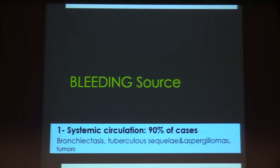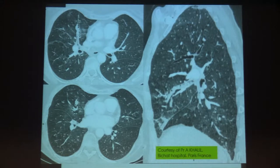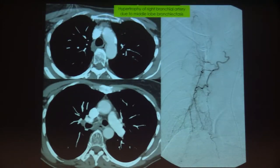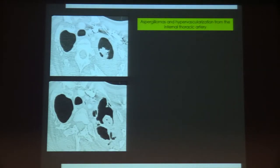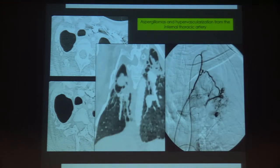The systemic circulation is involved in the vast majority of cases, which is why pulmonologists sometimes send patients directly to the cath lab — but I think we need to avoid this. Here is an example from my colleague Antoine: a patient bleeding from the middle lobe successfully treated by bronchial embolization, and another case of a young patient with aspergillomas successfully treated by embolization of the internal thoracic artery.